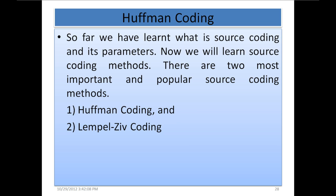In the last lecture, we learned about source coding and different types of source coding — lossless and lossy. So far, we have learned what source coding is and its parameters. Now we will learn source coding methods. There are two most important and popular source coding methods: Huffman coding and Lempel-Ziv coding.